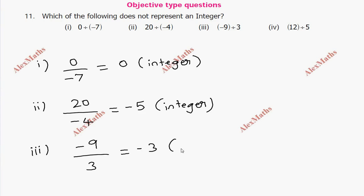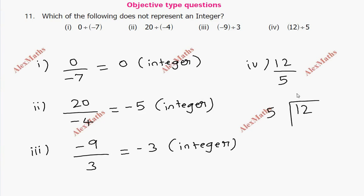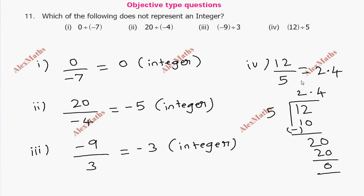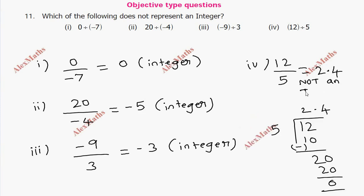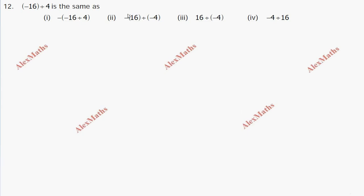The last sub-division: 12 divided by 5. 5 goes into 12 twice, giving 10; subtract, remainder is 2. Bringing down a zero: 5 times 4 is 20, remainder 0. So the answer is 2.4, which is not an integer. Therefore, which of the following does not represent an integer — the answer is 12 divided by 5.